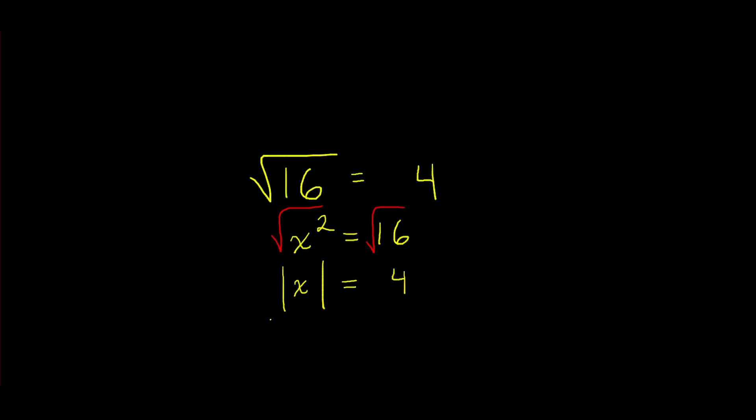The absolute value of x translates to two values, plus or minus x. And this is where the plus or minus comes from when you're solving for two roots of that equation. That's going to equal to four.